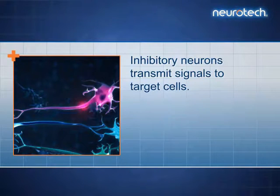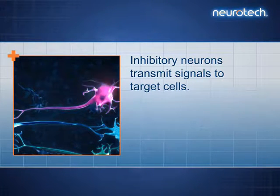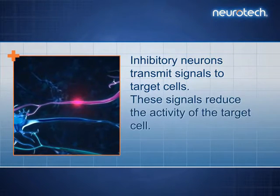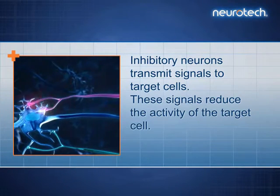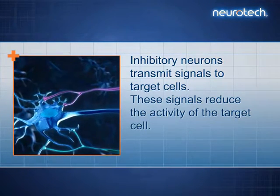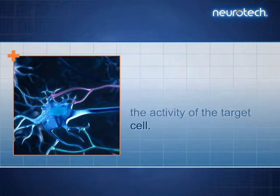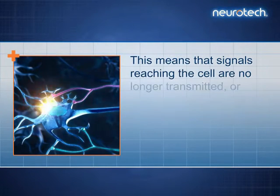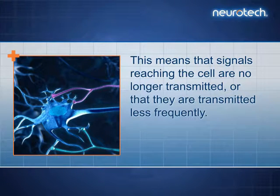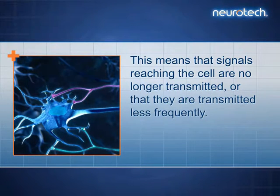Inhibitory neurons transmit signals to target cells. These signals reduce the activity of the target cell. This means that signals reaching the cell are no longer transmitted, or that they are transmitted less frequently.